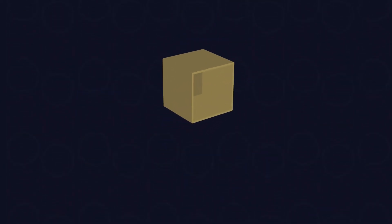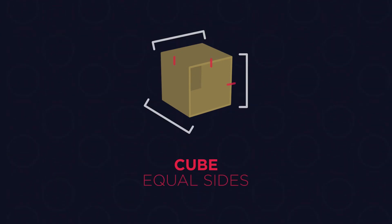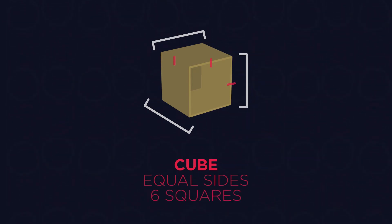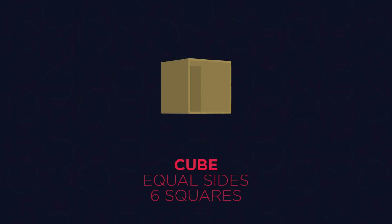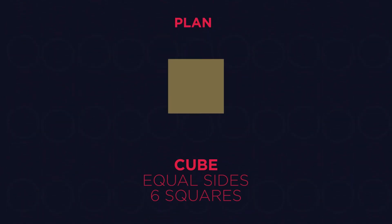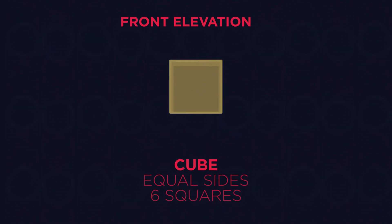First, we have cubes. Cubes are shapes where all lengths are equal. As they are the 3D versions of squares, it's useful to know that they are made up of 6 squares. To find a plan, we just have to visualise the square. A cube is quite a unique shape, as its plan, side elevation and front elevation are all the same.